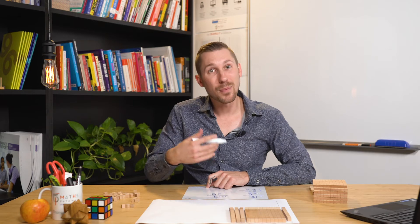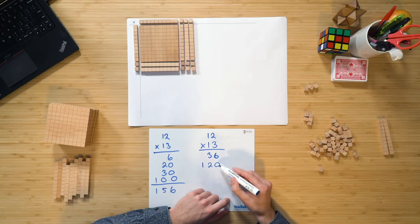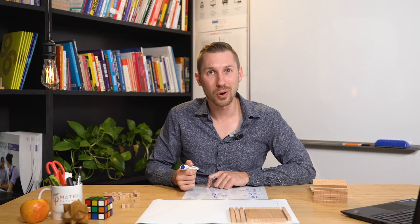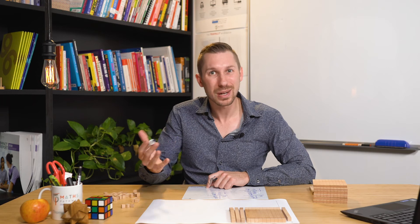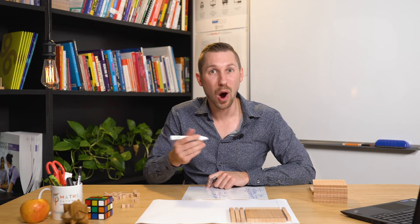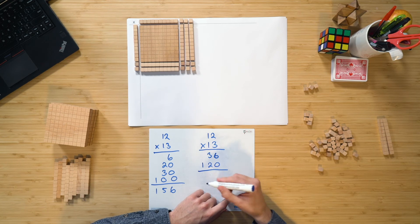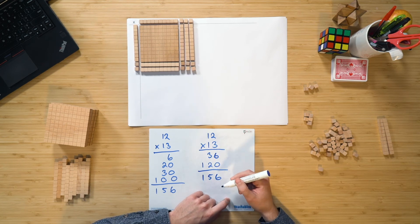Now you can see there by bringing in the place value language that we've automatically considered the zero, which quite often we just simply tell students you need to put a zero in the bottom right-hand corner. It really brings back the understanding of why we do that. And once again, we simply now need to add them together. So we know that that's going to be 156.